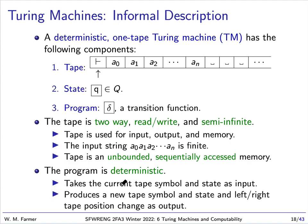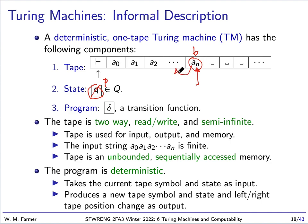Our program is deterministic. If we're looking at a spot with our read-write head, it takes the tape symbol and the state as input, then it produces a new tape symbol — let's say B — and a new state, which I'll call P, and then it moves either left or right. That's basically how the machine works.